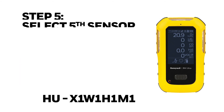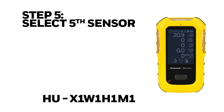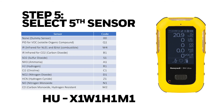Step 5: select the fifth sensor. Now it is time to select the sensor for slot number 5. This is where it will get interesting — we have a host of sensors and you need to pick one depending on your application. In this case I'm assuming that I need a VOC, so I'm going to choose the code Q1.